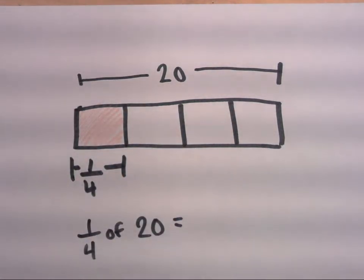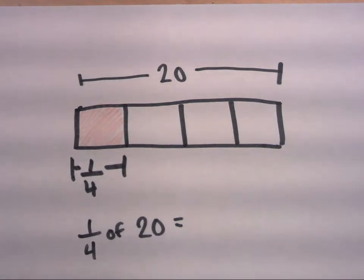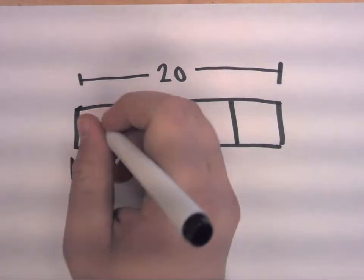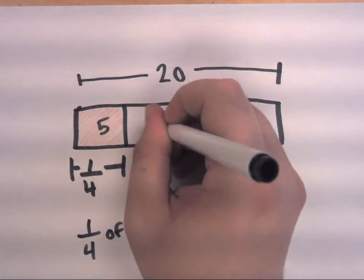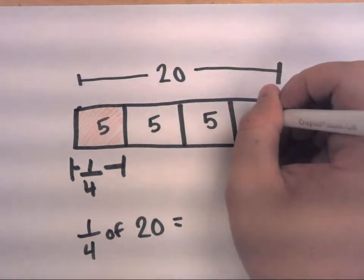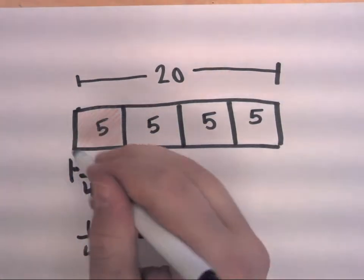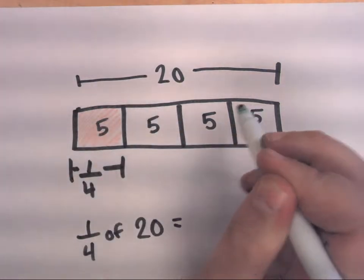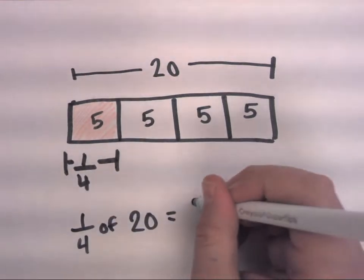So we need to think, all right, I have 4 equal areas. What must the value of those areas be to add up to 20? Well, I know 20 divided by 4 equals 5. So each of these areas here represents the whole number 5. And since I'm only considering one part out of 4, 1/4 of 20 would just be 5.